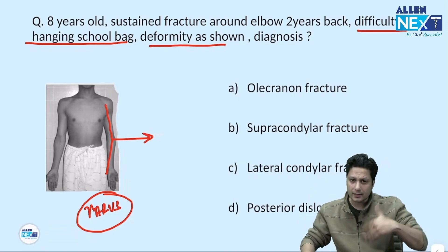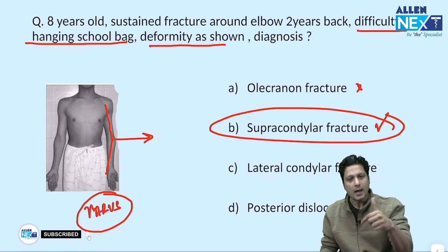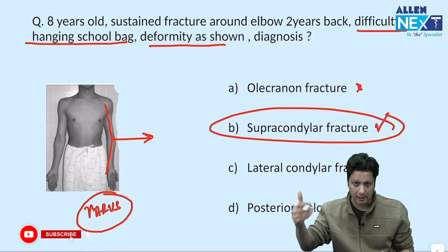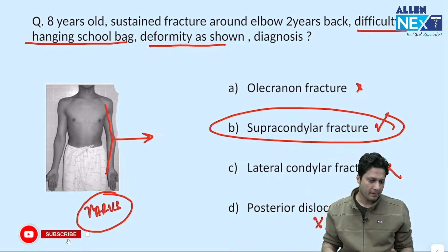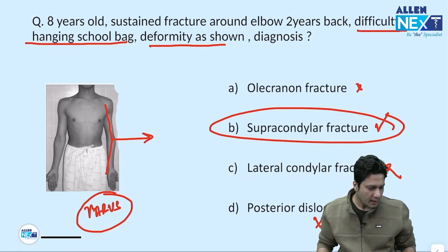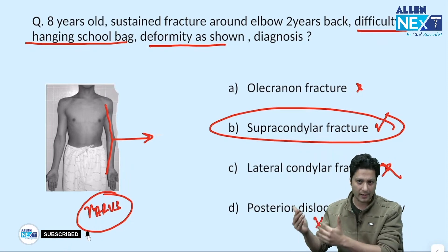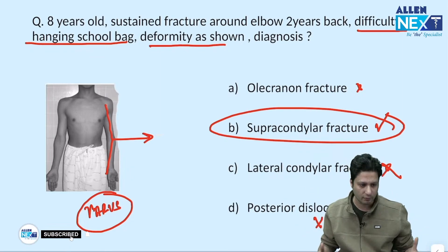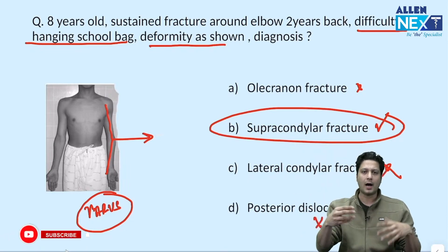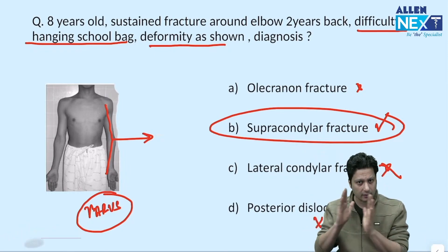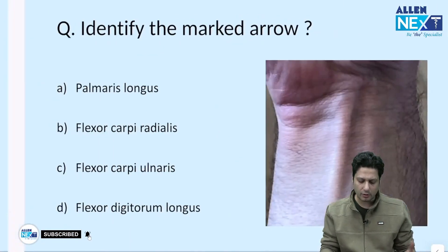Supracondylar fracture of the humerus is the answer. Lateral condylar fracture results in nonunion, causing progressive cubitus valgus deformity — so it is not the answer. Posterior dislocation of the elbow would require different clinical findings. Lateral condylar fracture results in nonunion leading to cubitus valgus, while supracondylar fracture results in malunion leading to progressive cubitus varus. Both varus and valgus deformities can only be assessed with the elbow in extension — a key clinical point.